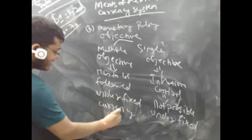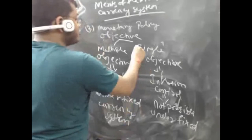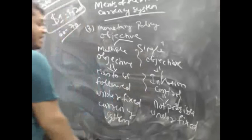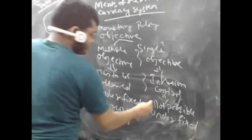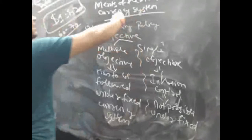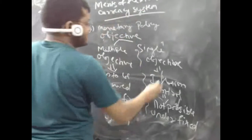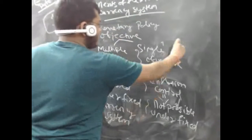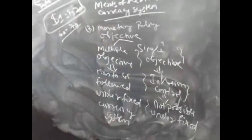We have seen the benefits of following single versus multiple objectives. So if the RBI wants to follow the single objective of inflation control, it will have to move to a flexible currency system. The merit of the flexible currency system is that the RBI, as a monetary policy authority, can follow the single objective of inflation control — which was not possible under the fixed currency system.